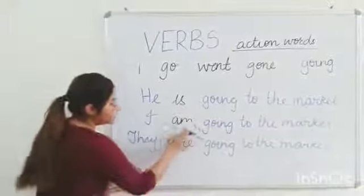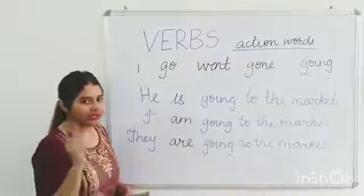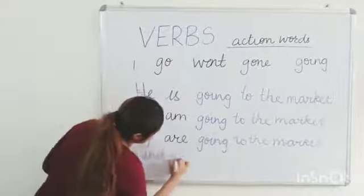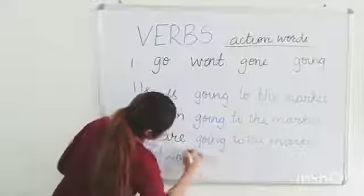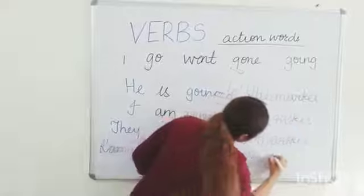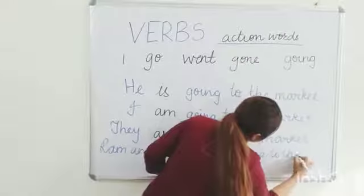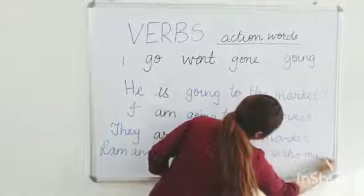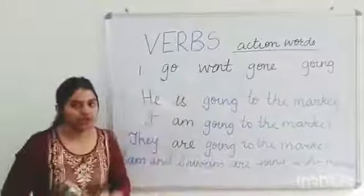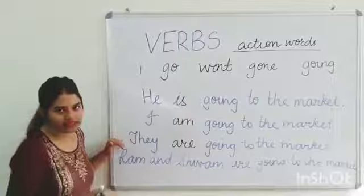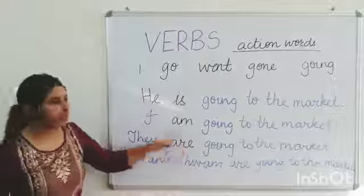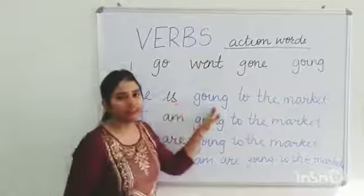Also we know that 'are' is used for plural. So let's make one more sentence: Ram and Shyam are going to the market. And don't forget to put a full stop at the end of the sentence. So I hope you understand how to frame sentences with the help of a main verb and then helping verbs. Helping verbs always come before the main verb.